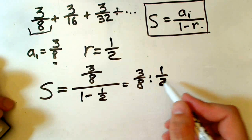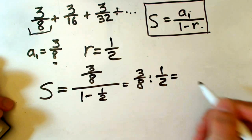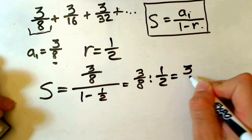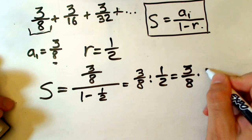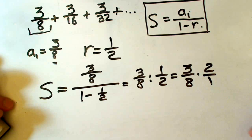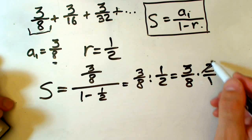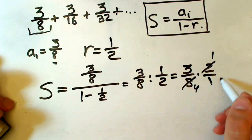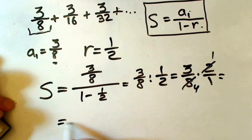When dividing by a fraction, we multiply by the reciprocal, times 2 over 1. Now, 2 and 8, we have 2 is 1, 4 here, and our sum equals 3 over 4.